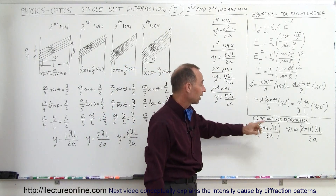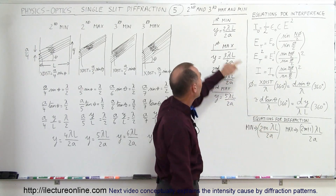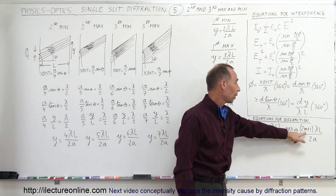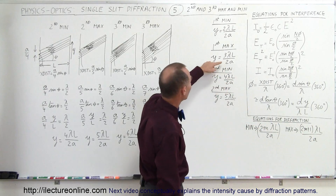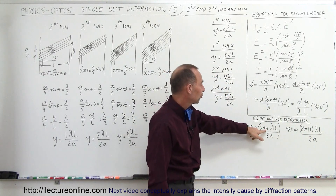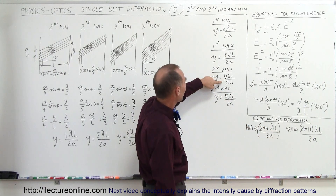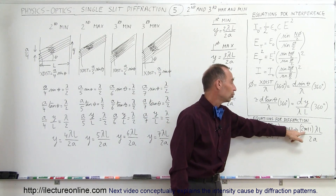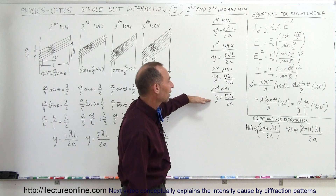For the first minimum, if M equals 1: Y equals 2 times 1 times lambda L over 2A, giving the first minimum. For the first maximum: 2 times 1 plus 1, which is 3, times lambda L over 2A. For the second minimum: 2 times 2 equals 4 lambda L over 2A. For the second maximum: 2 times 2 plus 1 equals 5 lambda L over 2A, giving the second maximum.